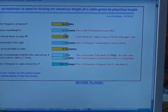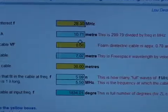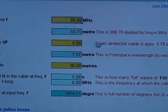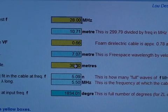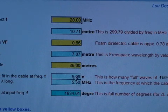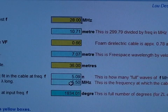So we enter 28 megahertz up here in the frequency of interest. That's already there. So I just come in a bit tighter. And we have already entered a velocity factor of 0.66 for this RG213, and I know it's 36 meters long. The spreadsheet comes up with an answer which tells us that the cable is one wavelength long at 5.50 megahertz.